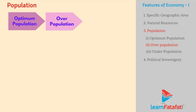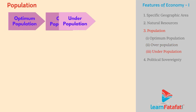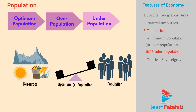Overpopulation. In this case, population is higher than the optimum level. Underpopulation. In this case, population is lower than the optimum level, such that population is not enough to utilise available resources.